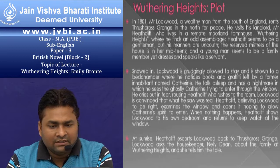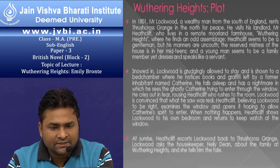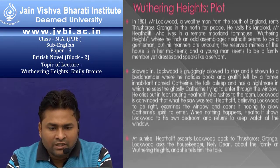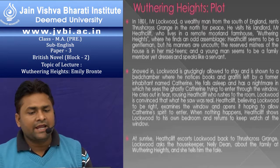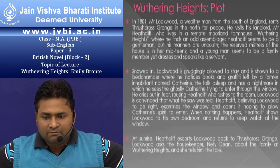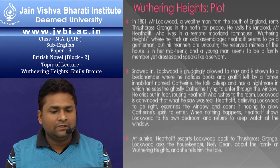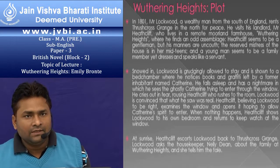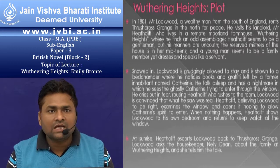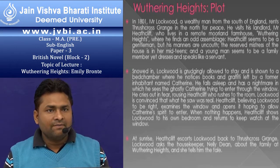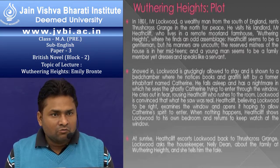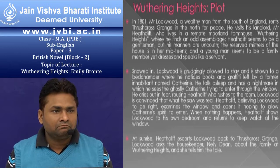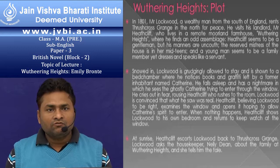The reserved mistress of the house is in her mid-teens, and the young man seems to be a family member, yet dresses and speaks like a servant. Snowed in, Lockwood is grudgingly allowed to stay and is shown to a bedchamber where he notices books and graffiti left by a former inhabitant named Catherine. He falls asleep and has a nightmare in which he sees the ghostly Catherine trying to enter through the window. He cries out in fear, rousing Heathcliff who rushes to the room. Lockwood is convinced that what he saw was real. Heathcliff, believing Lockwood to be right, examines the window and opens it, hoping to allow Catherine's spirit to enter. When nothing happens, Heathcliff shows Lockwood to his own bedroom. At sunrise, Heathcliff escorts Lockwood back to Thrushcross Grange.